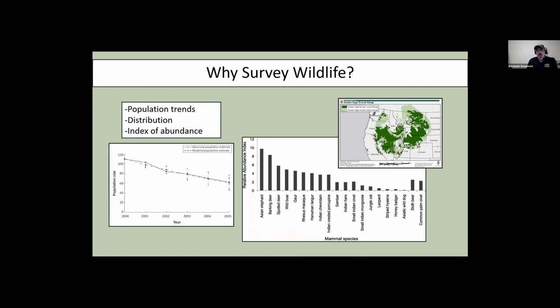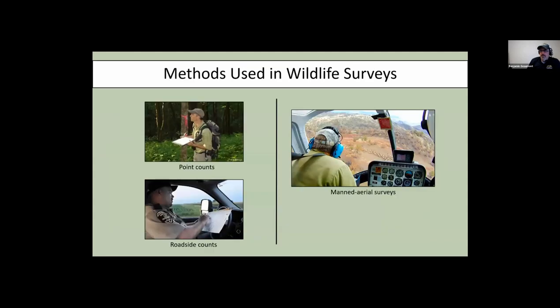Everyone in this group understands why we do wildlife surveys. We do them for a number of different reasons to develop some population trends. We might use them to figure out distributions or changing distributions of species. And it also can provide us with maybe an index of abundance of a certain group that we're interested in. For the many reasons we do them, there are also many different methods that we use to conduct these surveys. They all have their pros and cons and situations where they're best suited to use.